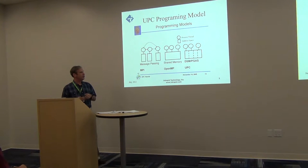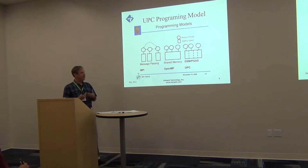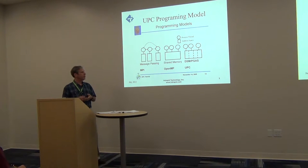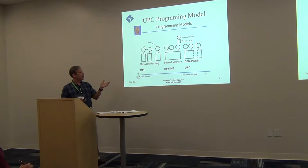OpenMP targets SMP-based, multi-core systems, primarily focused on a single system where threads are implemented as operating system threads. UPC, on the other hand, has threads implemented as separate processes. The dashed lines indicate those separate process address spaces, but because they're all connected to a global address space, they can access it transparently as long as those variables and memory were declared as shared.